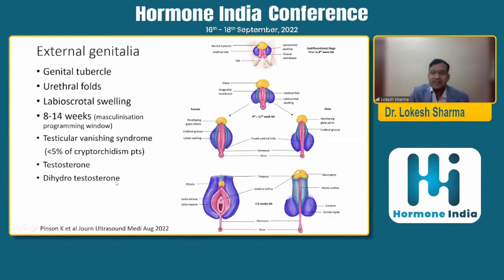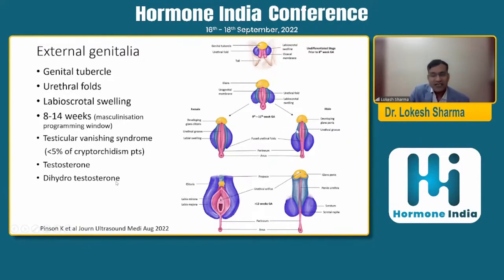These events occur between 8 to 14 weeks of age — before 8 weeks it is a single bipotential external genitalia, and within the next 5–6 weeks virilization occurs. This is called the masculinization programming window. When gonadal development is disturbed before this event, it leads to genital ambiguity due to gonadal dysgenesis. If testicular issues happen after 14 weeks of embryonal age, that is called testicular vanishing syndrome — there will be no testes, but there will not be any ambiguity either.